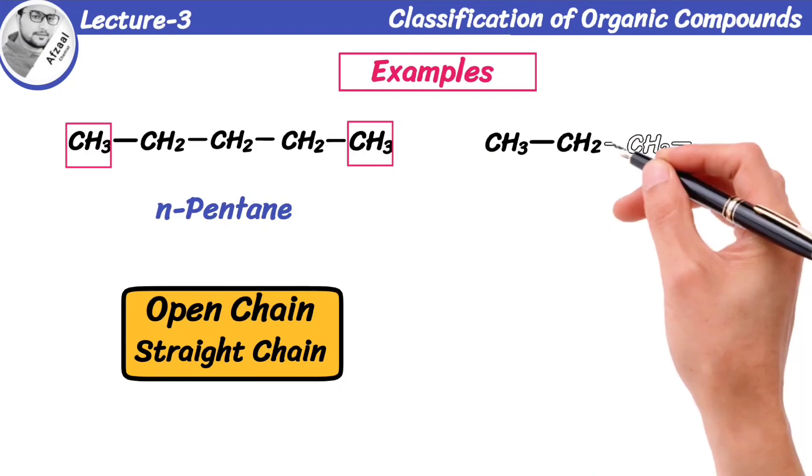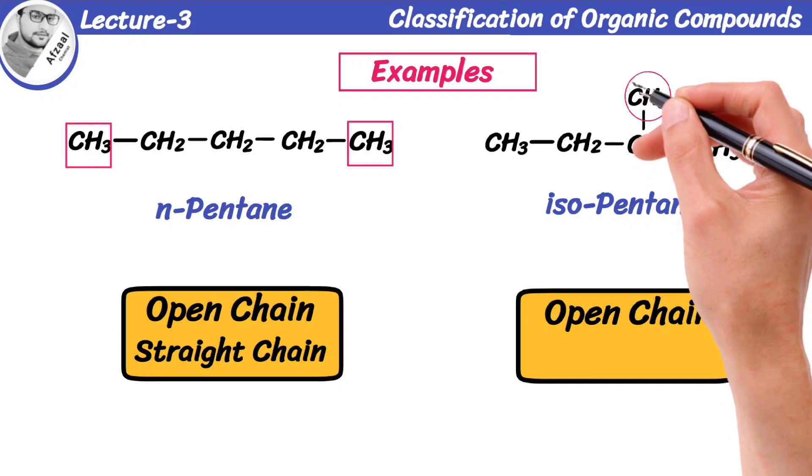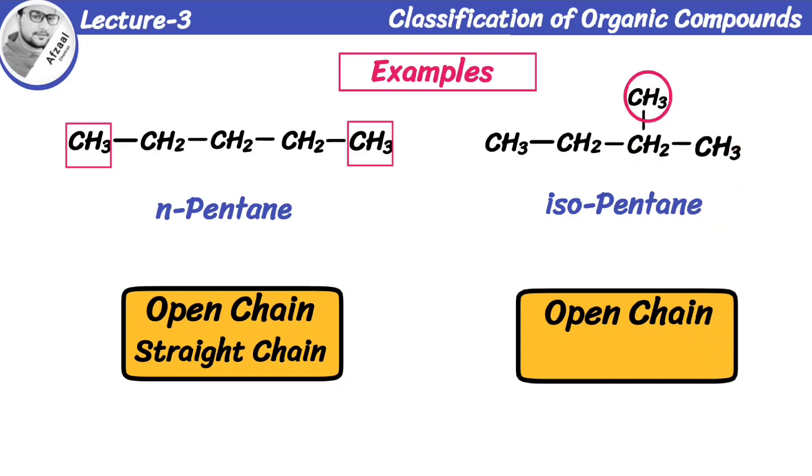We take another example. It also has an open chain structure, but a group of atoms CH3 is attached to the main chain and forms a branch on it. So this compound is branched chain organic compound.